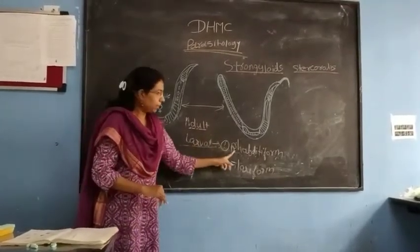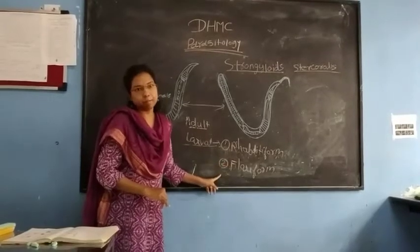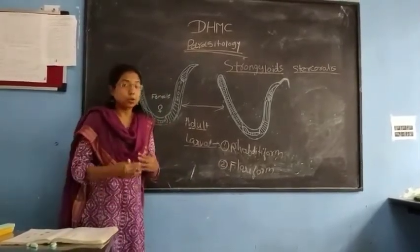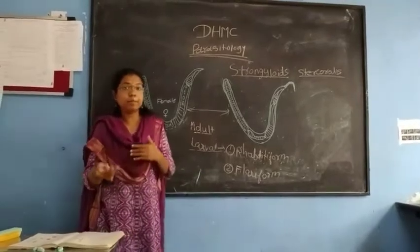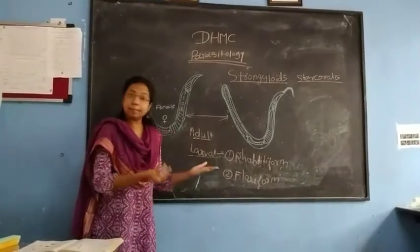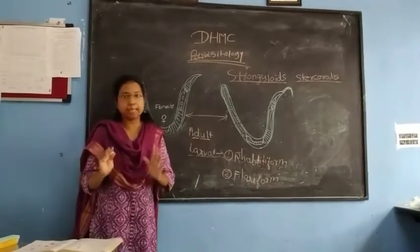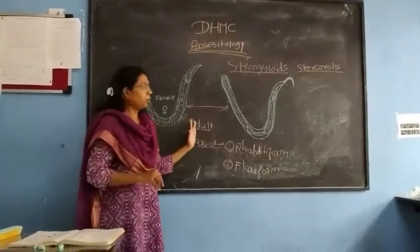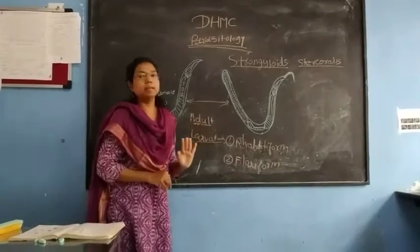So there are rhabditiform form larvae and filariform form larvae — two types of larvae. How one larva is going to develop into another larva, which will be the infective form, we are going to discuss in the life cycle part. This is the morphology of this parasite.